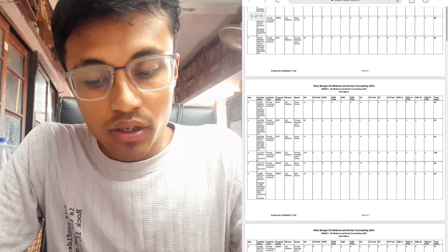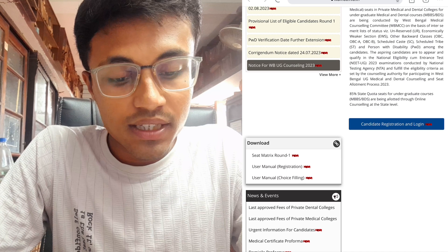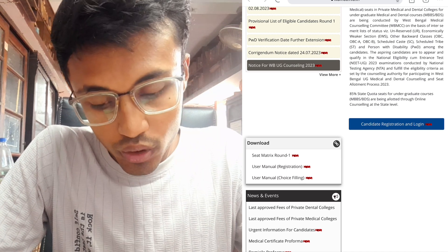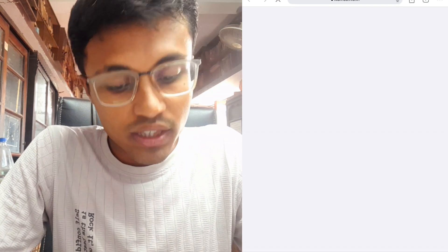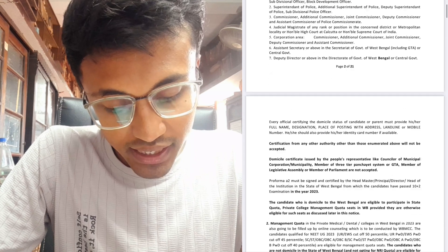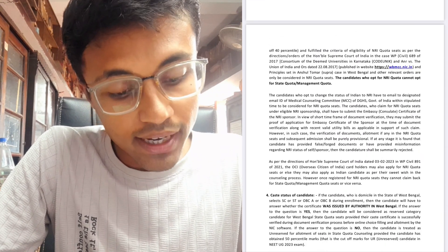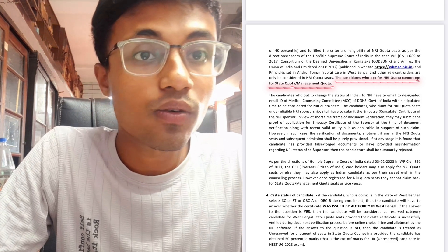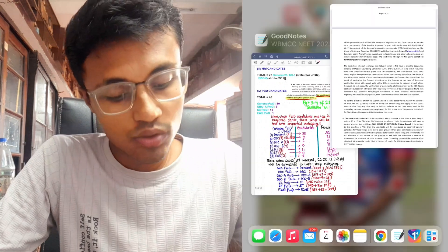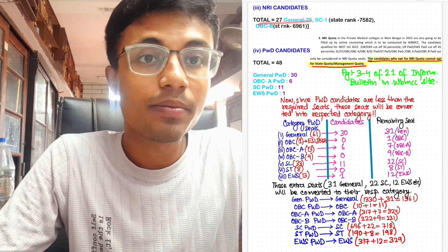Just to verify it, you will need to login to WBMCC.nic.in and go to the notice for WB-UG counseling, and there on page 3 and 4, you can see the candidates who opt for NRI quota cannot opt for state quota or management quota. Hence, these 27 candidates won't be able to participate in the state quota.